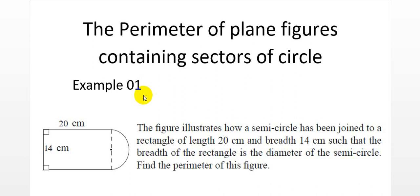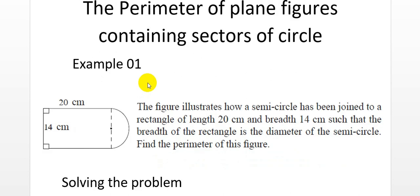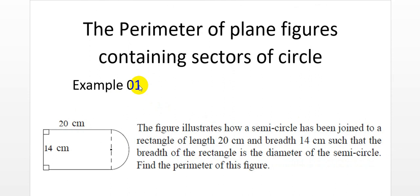Let's quickly jump to two examples where you will be able to understand how to calculate the perimeter of combined plane figures. As you can see in the first example, this particular plane figure has two sections: one is a rectangle with a length of 20 centimeters and a breadth of 14 centimeters, in which one end connects a semicircle as shown in the figure.